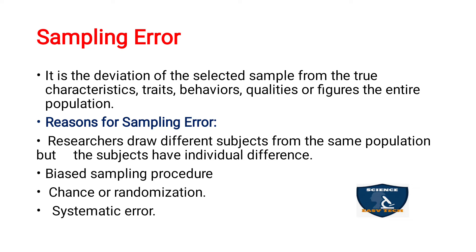Other reasons include biased sampling procedure — researcher bias or sampling bias during the sampling procedure. Chance or randomization — samples taken by chance or through randomization can also lead to sampling error. And systematic error — even when systematically selecting samples, there may still be chances for error. All of these come under the reasons for sampling error.